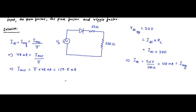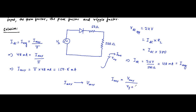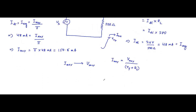The maximum value of current flows when the supply voltage is maximum. Because it is AC, when the voltage attains its maximum value, the maximum current will flow. At that point, Imax equals Vmax divided by RF plus RL — the total resistance involved in the diode circuit. Therefore, Vmax equals Imax multiplied by RF plus RL.